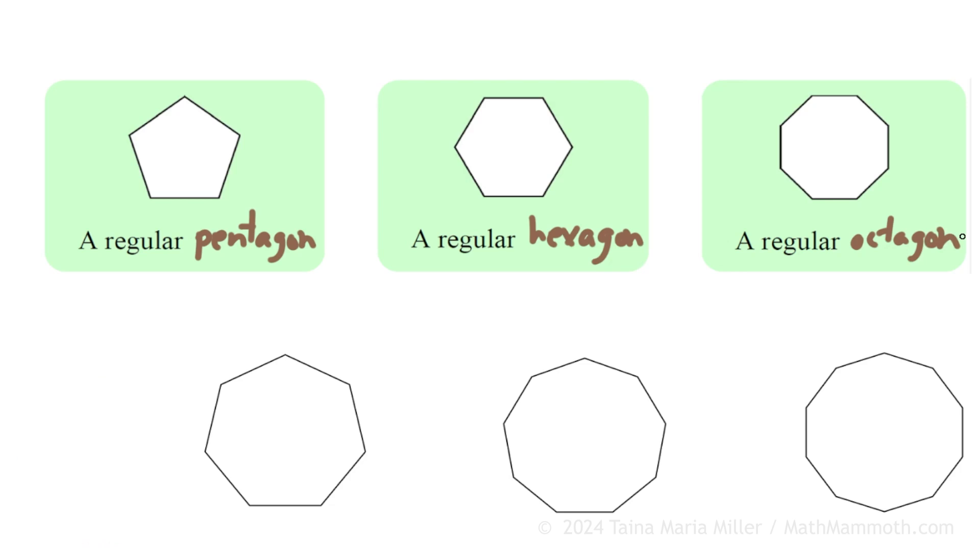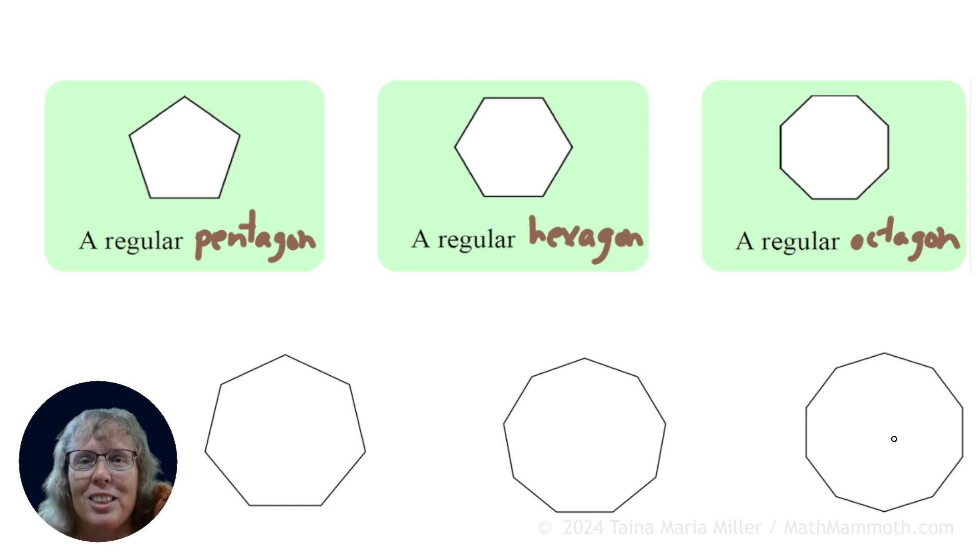And then over here, in the second row, we have one, two, three, four, five, six, seven. So we have a regular heptagon and two, three, four, five, six, seven, eight, nine. So this one is a nonagon, a regular nonagon. And this last one has ten vertices, so it's a decagon, regular decagon.